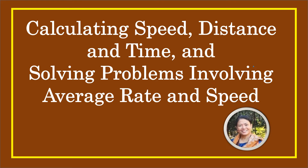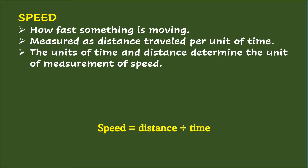Calculating Speed, Distance, and Time and Solving Problems Involving Average Rate and Speed. Speed tells how fast something is moving. It is measured as a distance traveled per unit of time. You can find the average speed of an object if you know the distance traveled and the time it took.